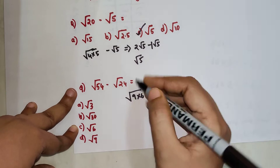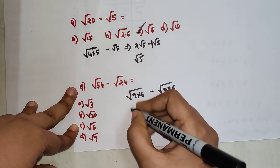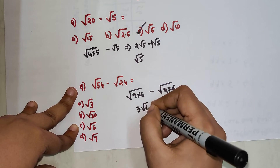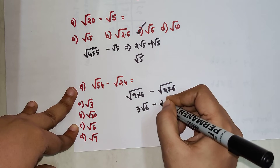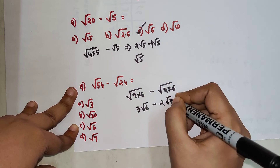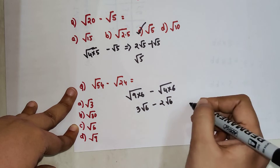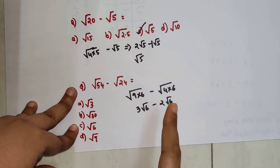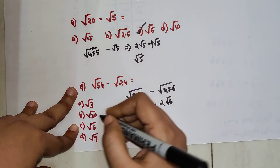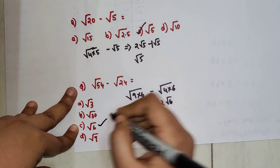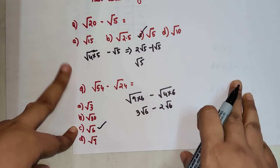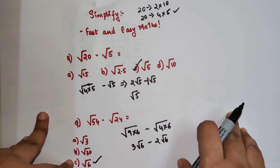So this can now be written as 3 root 6 minus 2 root 6. So 3 minus 2 will give you just 1 root 6. So again, option C is my answer.